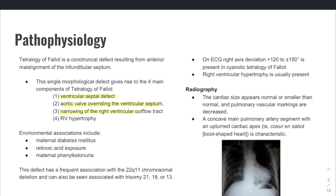There's a VSD, overriding of the aorta, narrowing of the right ventricular outflow tract or the infundibulum, and then right ventricular hypertrophy is also a finding. That's really what we're seeing predominantly in our ECG, the findings of right ventricular hypertrophy.